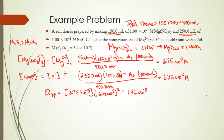Plugging into Q: Qsp equals [Mg²⁺] times [F⁻]² equals 3.75 × 10⁻³ times (6.25 × 10⁻²)², giving Q equal to 1.46 × 10⁻⁵. Since Ksp is 6.4 × 10⁻⁹, Qsp is greater than Ksp, so a precipitate will form.